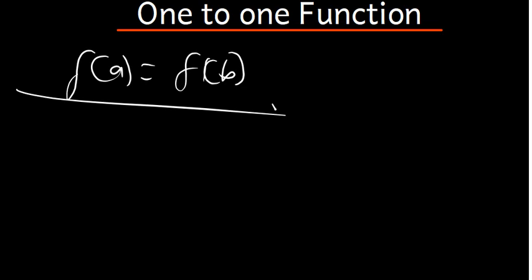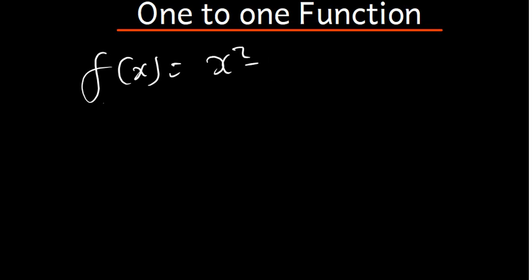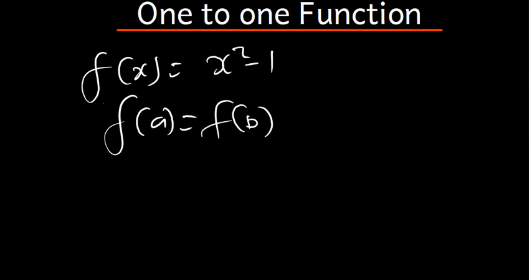For example, let's say we have a function f(x) = x² - 1. Let's see if this function is one-to-one. A function is said to be one-to-one if f(a) = f(b). So wherever there is x, I'm going to put a, giving us a² - 1 has to be equal to b² - 1.